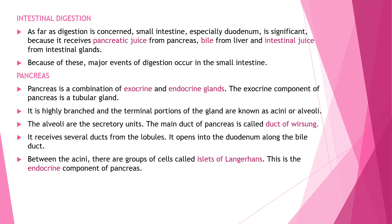The pancreas is a combination of exocrine and endocrine gland. The exocrine component is a highly branched tubular gland; the terminal portions are known as acini or alveoli, which are the secretory units. The main duct of the pancreas is called the duct of Wirsung. It receives several ducts from the lobules and opens into the duodenum along with the bile duct.